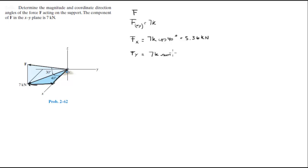7kN sine 40 degrees. But you gotta see that it's going towards the negative y direction, so it would be negative 4.5kN.